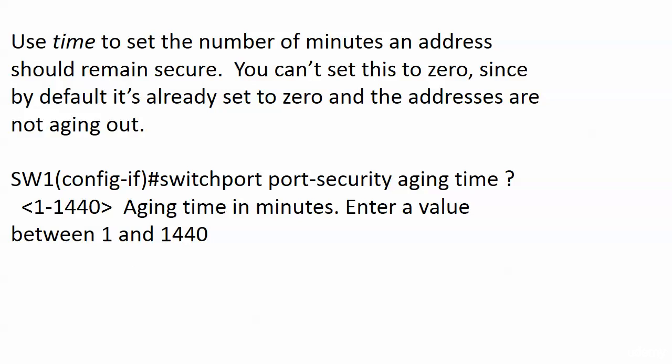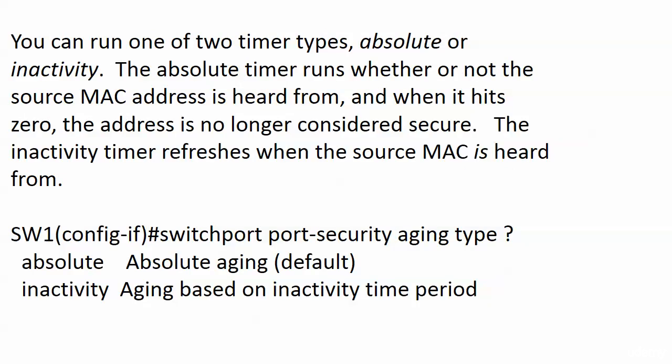You can change the aging time in minutes. As for the timer types, you can run one of two types: absolute or inactivity. The absolute timer is like a countdown clock — you set it to 10 minutes, it counts down to zero, and then that address is no longer considered secure. The inactivity timer refreshes when the source MAC address is heard from. With the absolute timer, the switch doesn't care how often it hears from that MAC address — when that timer hits zero, it hits zero. The inactivity timer refreshes every time the source MAC address is heard from.